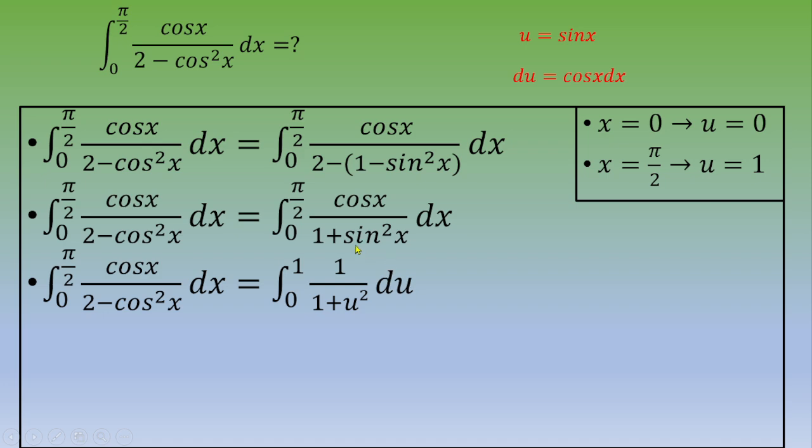We need to find an antiderivative of this function 1 over 1 plus u², and this is a formula. The antiderivative is tangent inverse of u, so tan⁻¹(u) from 0 to 1.